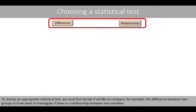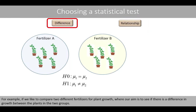To choose an appropriate statistical test, we must first decide if we'd like to compare, for example, the difference between two groups, or if we want to investigate if there is a relationship between two variables. For example, if we'd like to compare two different fertilizers for plant growth, where our aim is to see if there is a difference in the growth between the plants in the two groups.